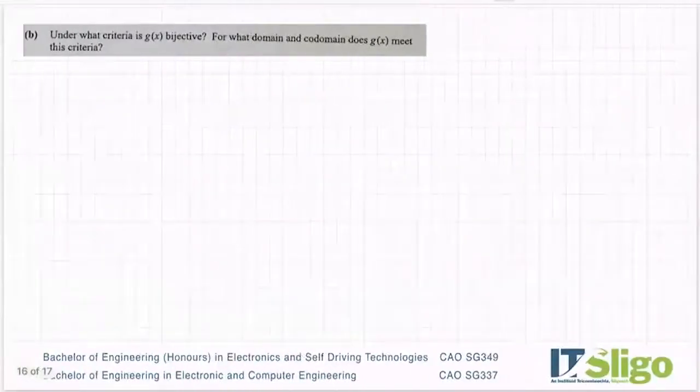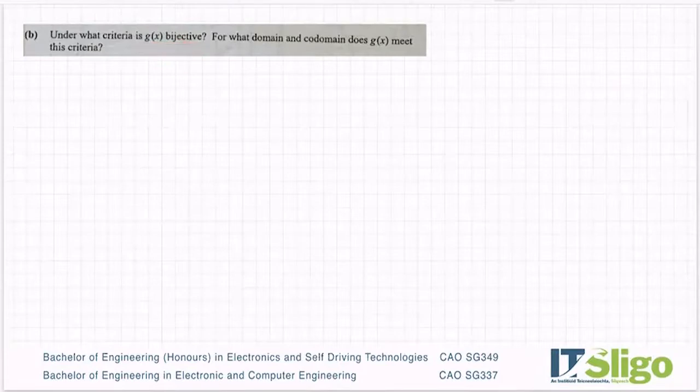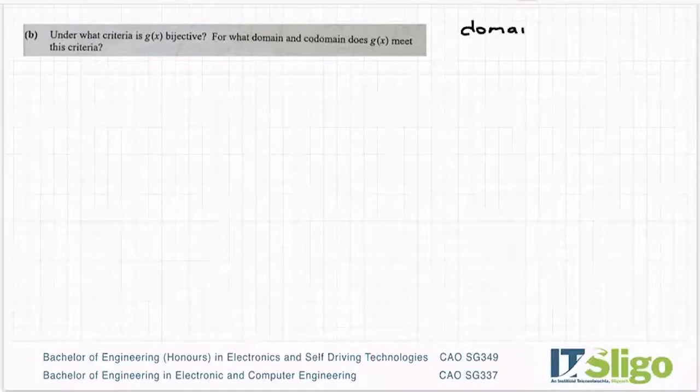Part B: under what criteria is g of x bijective? For what domain and codomain does g of x meet this criteria? This is why you have to know these words.